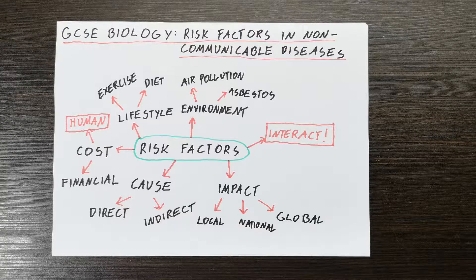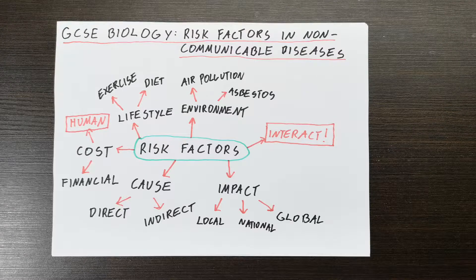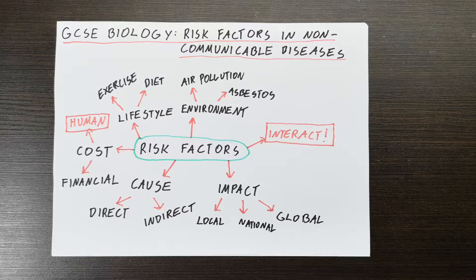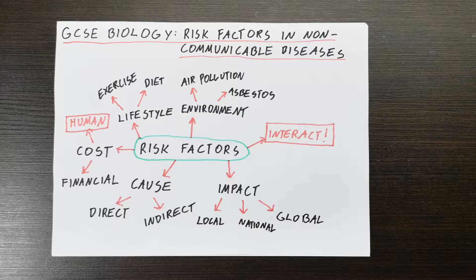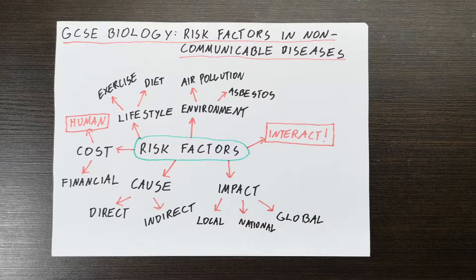Conversely, a lot of exercise and a healthy balanced diet reduces the risk of someone getting type 2 diabetes. But it's a risk factor — so if somebody leads a sedentary lifestyle and has a diet high in fats and sugars, that does not necessarily mean they will get type 2 diabetes. It just means they are at a higher risk of getting that disease. Lifestyle plays a very big factor in the risk of people getting various diseases.